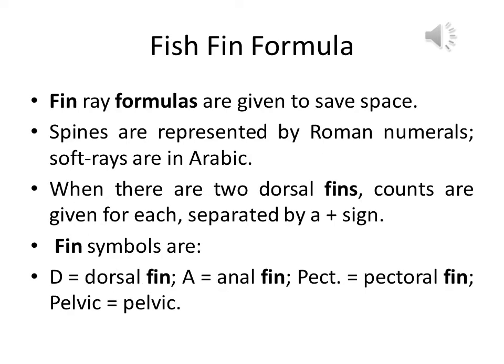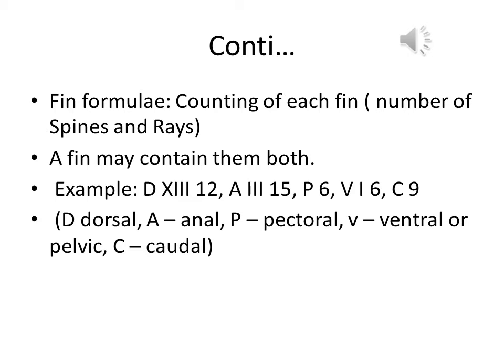So the question is: how can we count fins, and what is the fish fin formula which helps us count the fish fins? The fin ray formulas are given to save space. Spines are represented by Roman numerals, and soft rays are in Arabic numerals. When there are two dorsal fins, counts are given for each separated by a plus sign. Fin symbols are D for dorsal, A for anal fin, Pect for pectoral fin, and Pelvic for pelvic fin. Each fin consists of a number of spines and rays, and a fin may contain both.